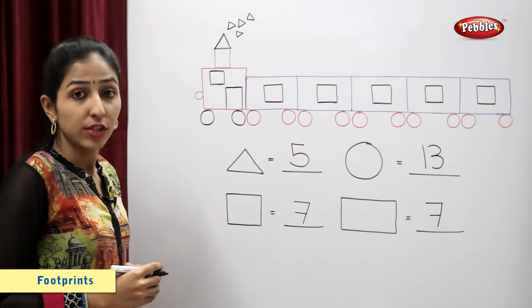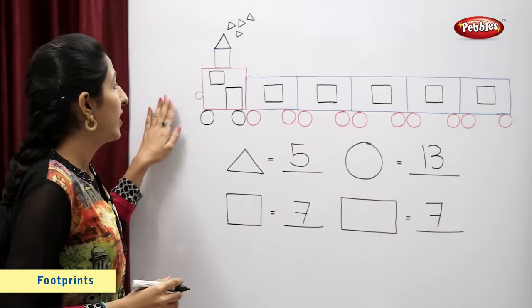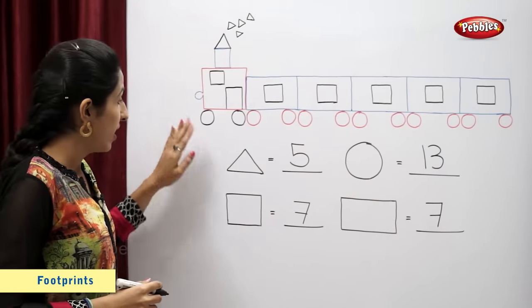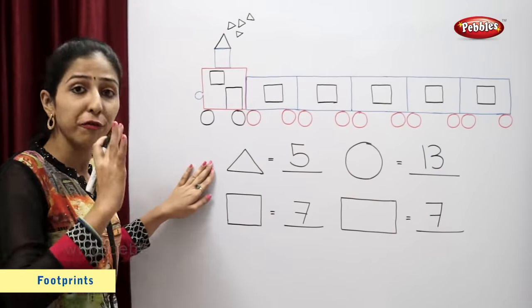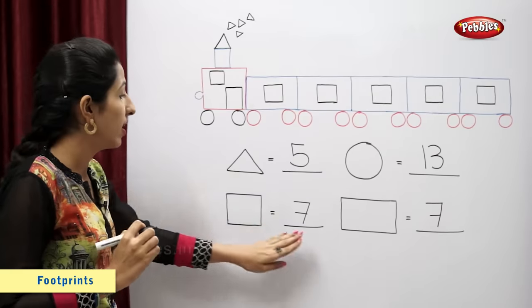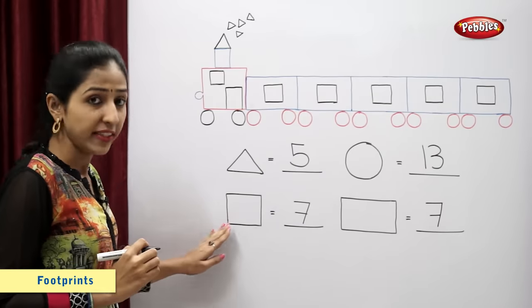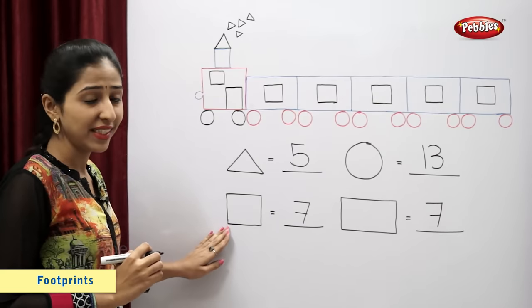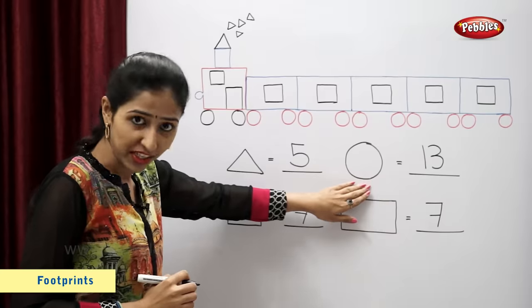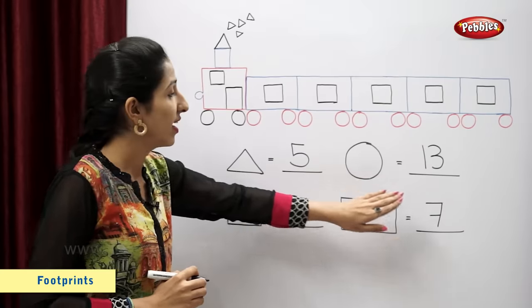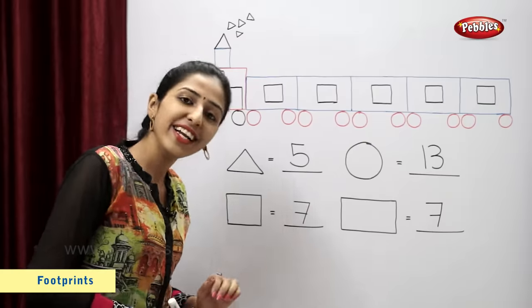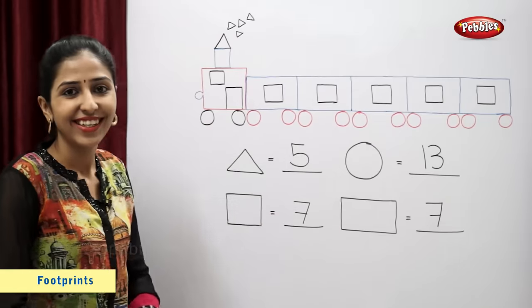So the train has five triangles, seven squares, thirteen circles and seven rectangles.